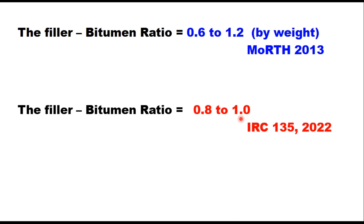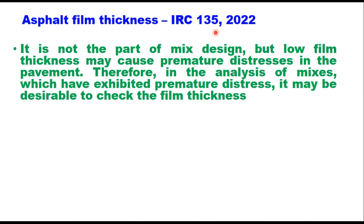As I will show you in the later part of this session, this range is mainly for dense bituminous mixes. It does not apply to open-grade friction courses or gap-graded mixes like SMA, where this filler-bitumen ratio can exceed 1.2 or 1.0. The second parameter is asphalt film thickness, which is introduced in IRC 135.